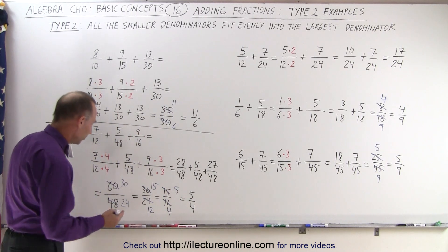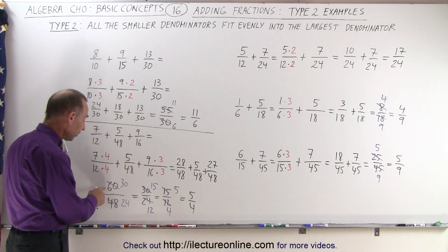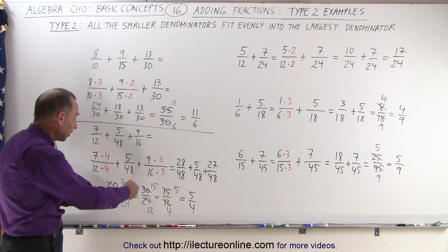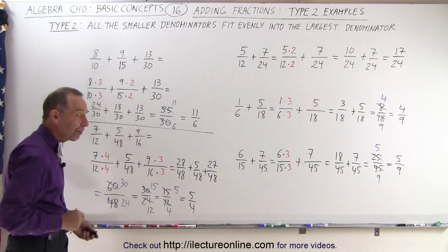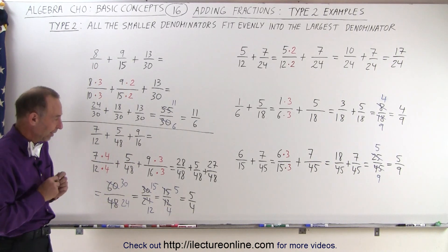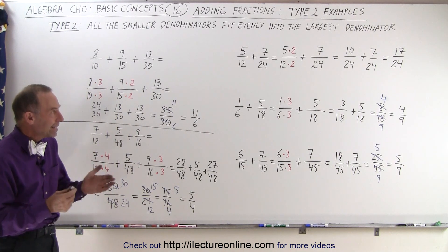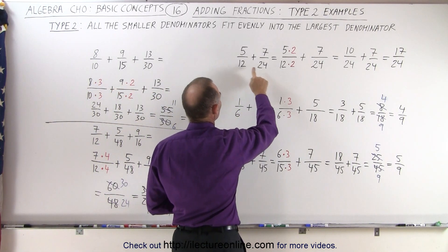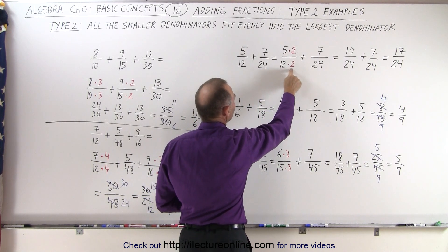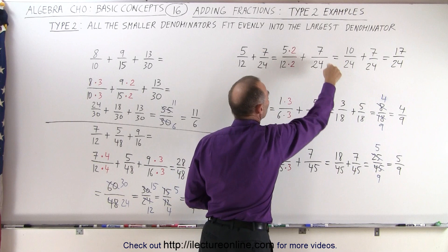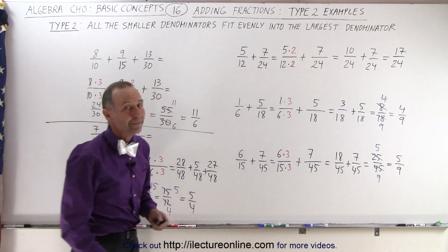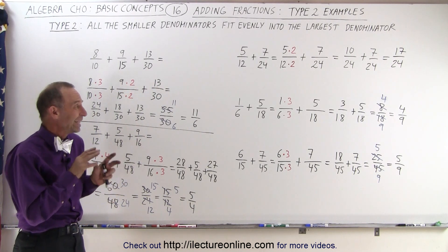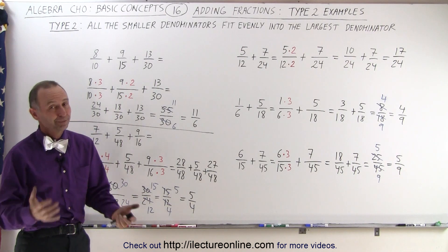We could have seen that could have been accomplished by simply dividing the numerator and denominator by 12, but you don't always see it immediately. Sometimes you can just make the number smaller until you realize that's the final solution, or just take it one step at a time — it doesn't really matter. So here you can see the technique: if the smaller denominator fits evenly into the larger denominator, you ask yourself how many times, then multiply that denominator by that number and do the same to the numerator to create a new fraction with the same denominator. And that's how we add fractions when the denominators are not the same but all the smaller denominators fit evenly into the largest.